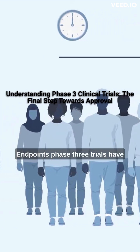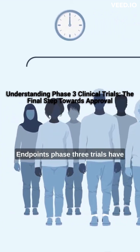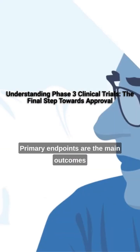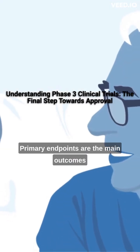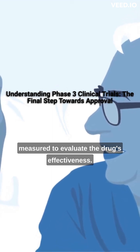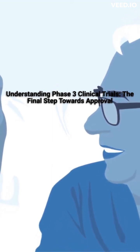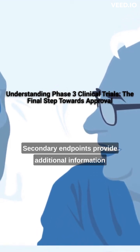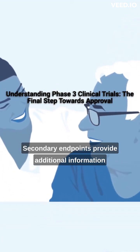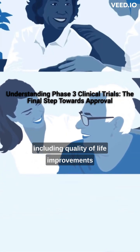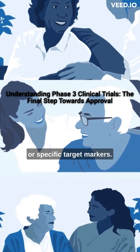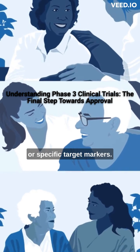Endpoints: Phase 3 trials have primary and secondary endpoints. Primary endpoints are the main outcomes measured to evaluate the drug's effectiveness. Secondary endpoints provide additional information, including quality-of-life improvements or specific target markers.